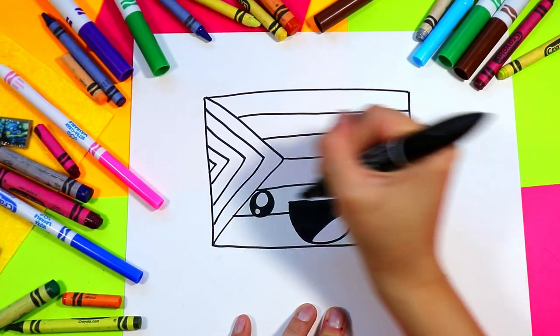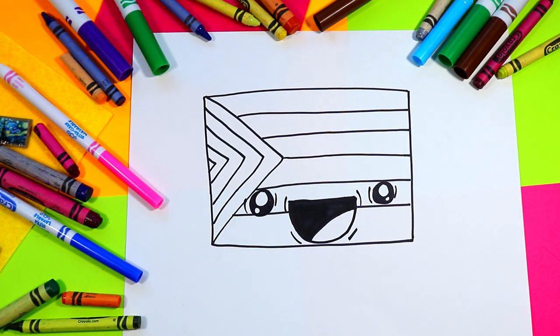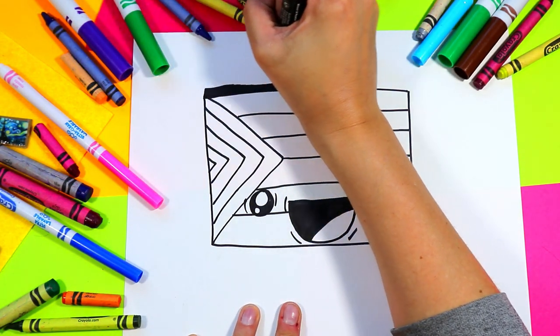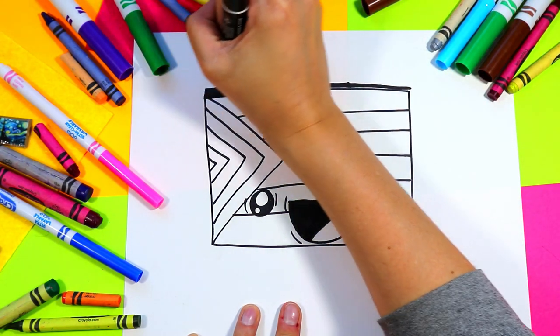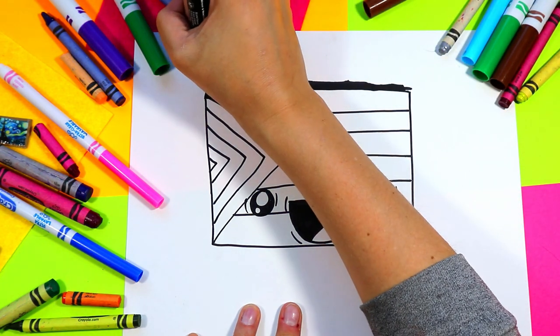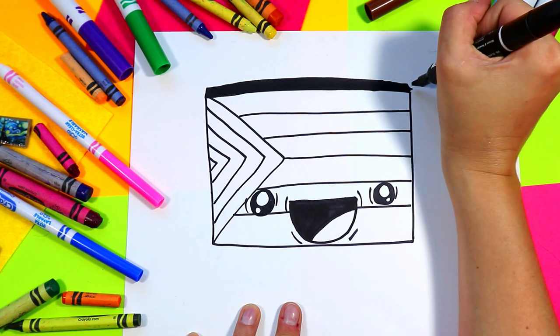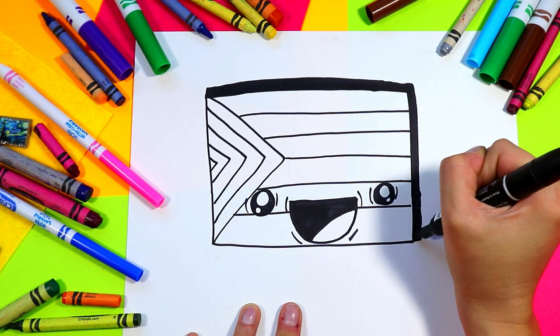Add lines around the eyes for expression. Next we're gonna take a marker, a thick black marker. We're gonna go around the outside of our flag with our black to thicken up our lines and make it stand out on our page.